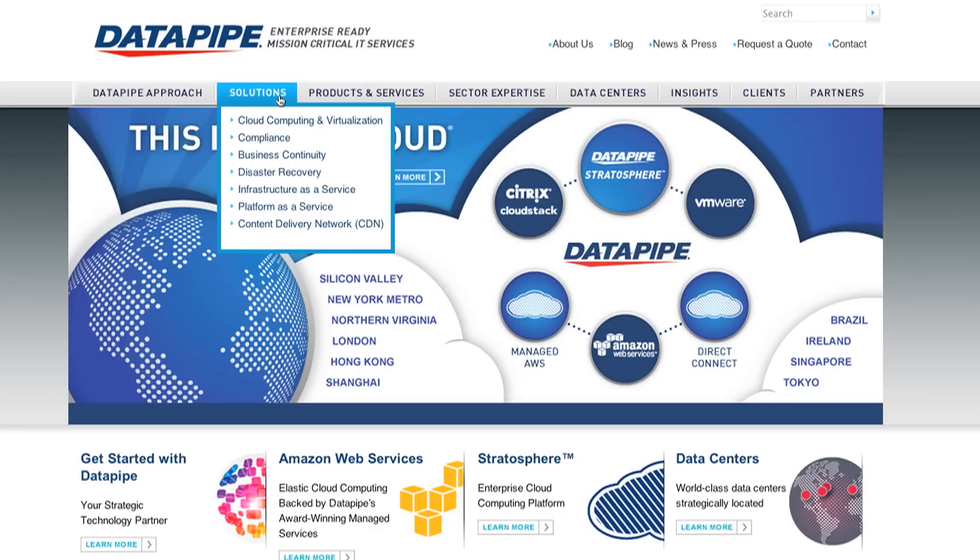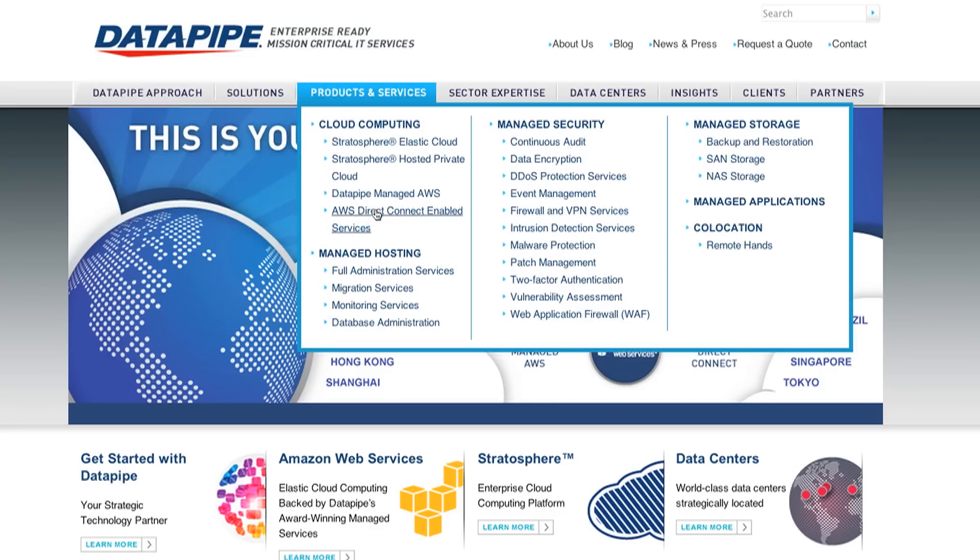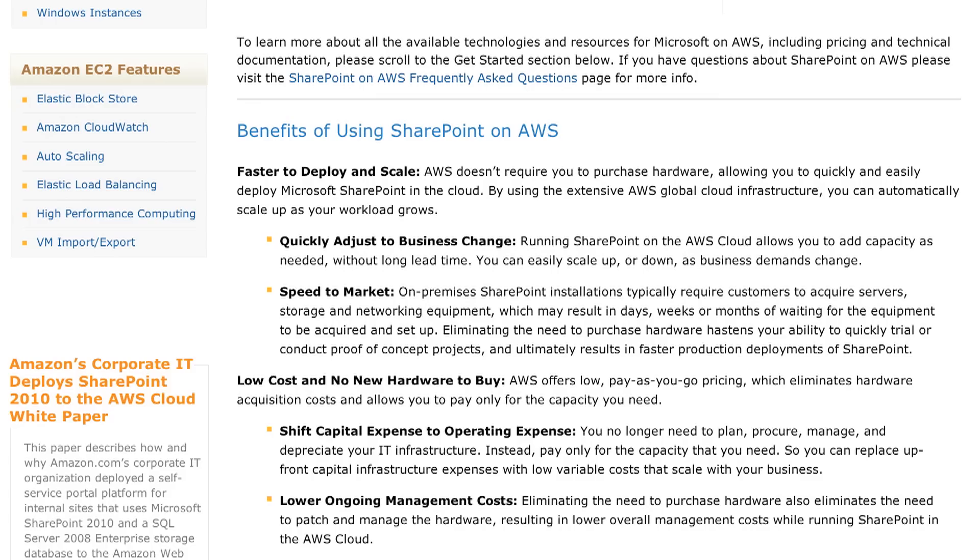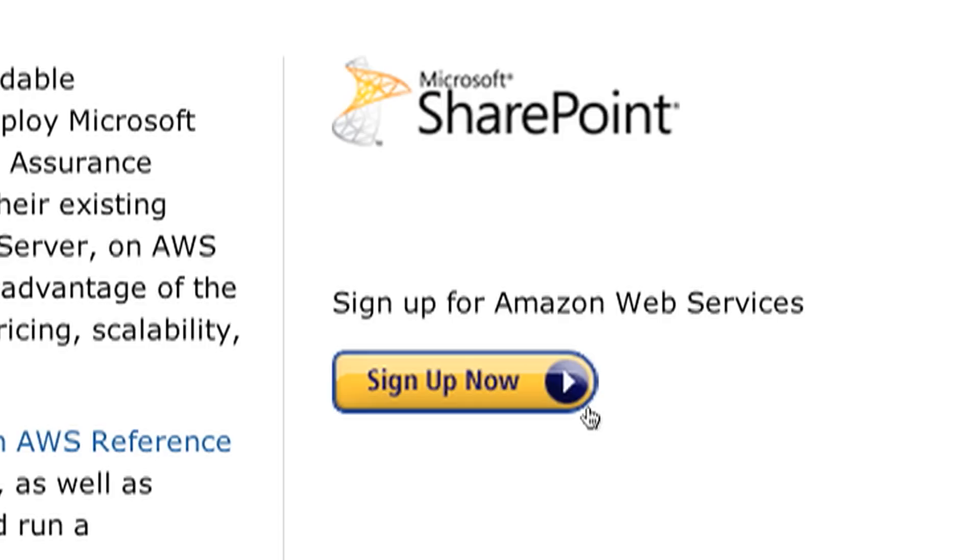As companies move out of their own data centers and into cloud computing, they need to have a place to put those resources and build out from there. When you're running SharePoint as a service on AWS, you're taking something you would normally build in-house and on-premises and putting this in the cloud. When you wrap the Datapipe services around that, you no longer have to worry about server management and you can strictly focus on the SharePoint pieces and developing out your SharePoint solution a little bit better.